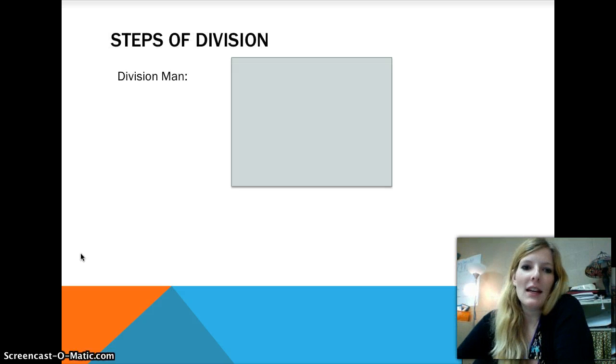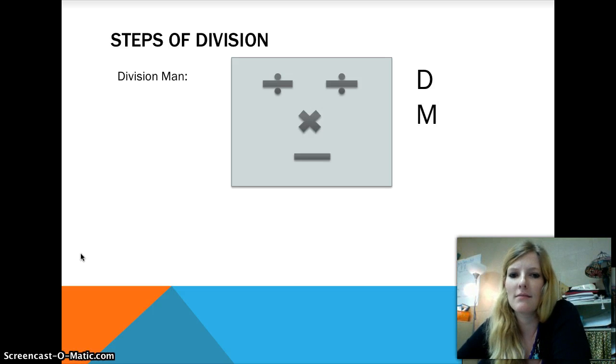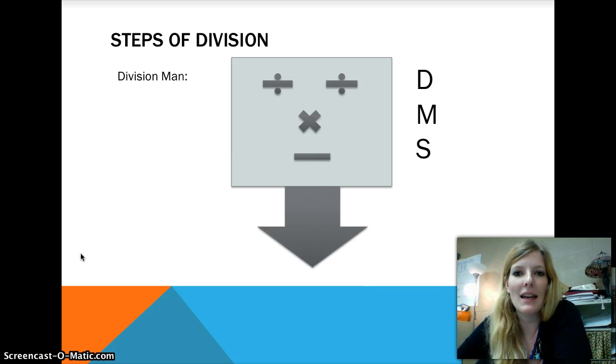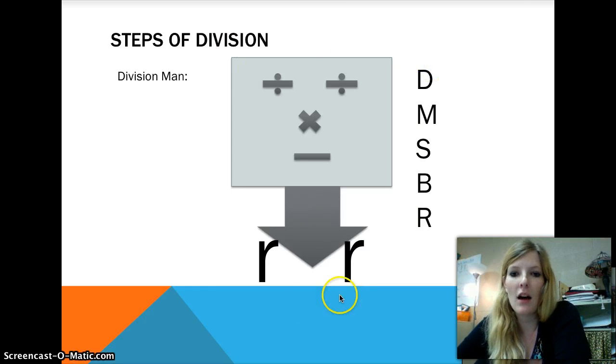Today we reviewed, or I taught you, somebody called Division Man. So this goes along with the steps of division. We start with division eyes - D for division. Then we have a multiplication nose - multiply. A subtraction mouth - S for subtract. The body is bring down. And then R's are remainder or repeat. So if you want to use this acronym DMSBR for Dad, Mom, Sister, Brother, Rover, or whatever you learned in fourth grade, that's fine. If you want to draw a picture of Division Man off in the corner of your paper, that is fine to refer back to.